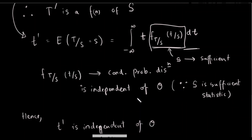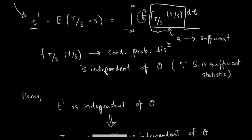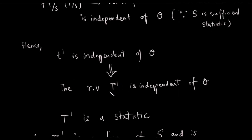The definition of the sufficient statistic is that the conditional probability distribution is independent of theta. Therefore, the function is independent of theta. Thus, T-dash could be independent as a random variable, because it involves sufficient statistics.